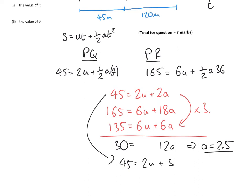And substituting in A equals 2.5, we quickly find that U equals 20. And we are done.